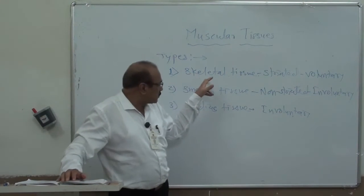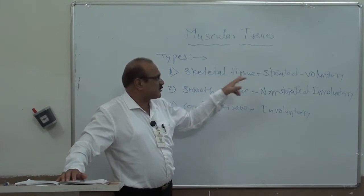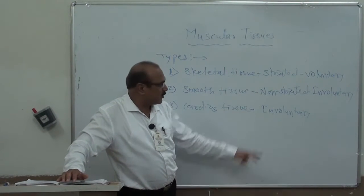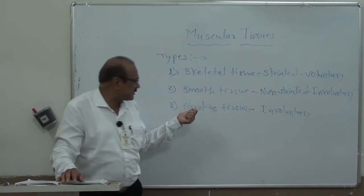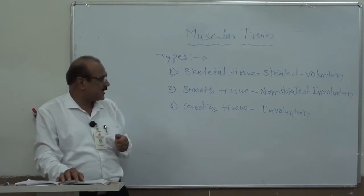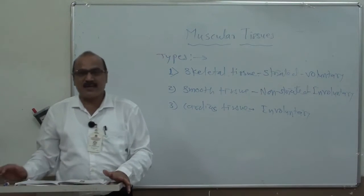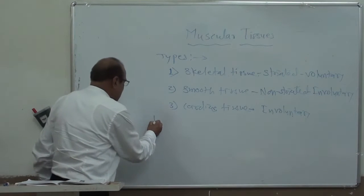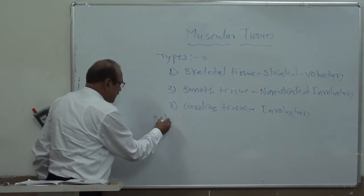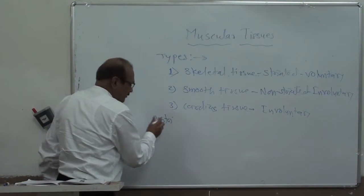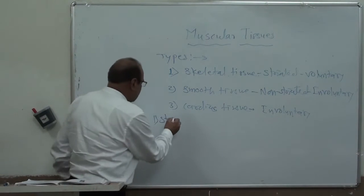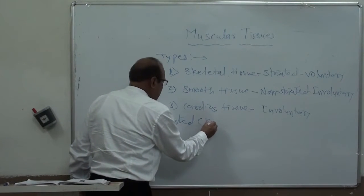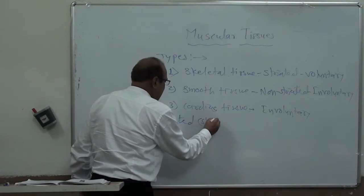To summarize: skeletal muscles or striated tissues are voluntary tissues, and smooth muscles and cardiac muscles are involuntary tissues. Now let us look in detail at the striated or skeletal type of tissue.